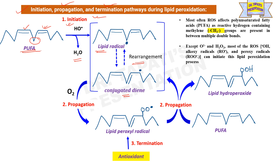In the propagation step, oxygen reacts with the lipid radical to produce a lipid peroxyl radical. This lipid peroxyl radical then reacts with another PUFA to produce lipid hydroperoxide, while simultaneously converting the PUFA into a new lipid radical, continuing the chain reaction.